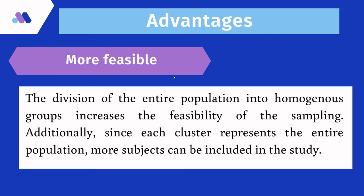More feasible: the division of the entire population into homogeneous groups increases the feasibility of sampling. Additionally, since each cluster represents the entire population, more subjects can be included in the study. So it is the most feasible method.